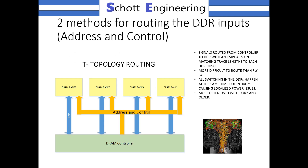There are two typical methods for routing DDR inputs — the address and control. There's the T-type methodology, which was used back in the days of DDR and DDR2. Now in the days of DDR3 and DDR4, we don't see this topology very often.